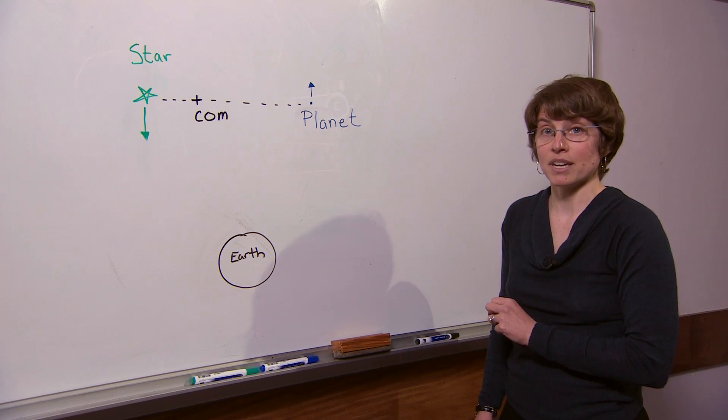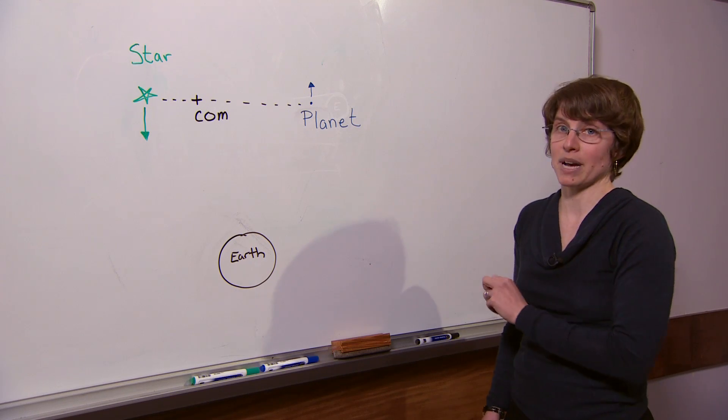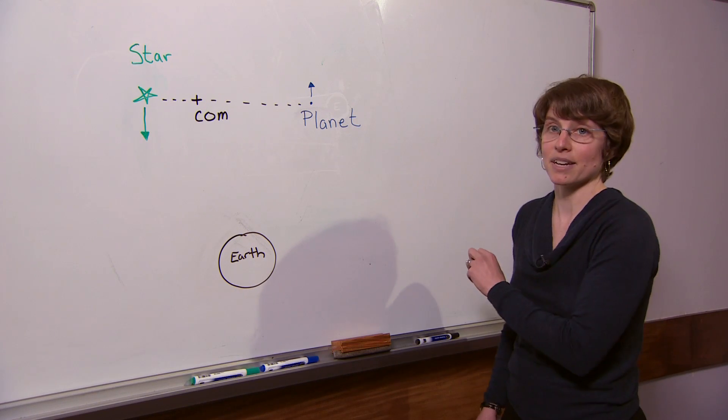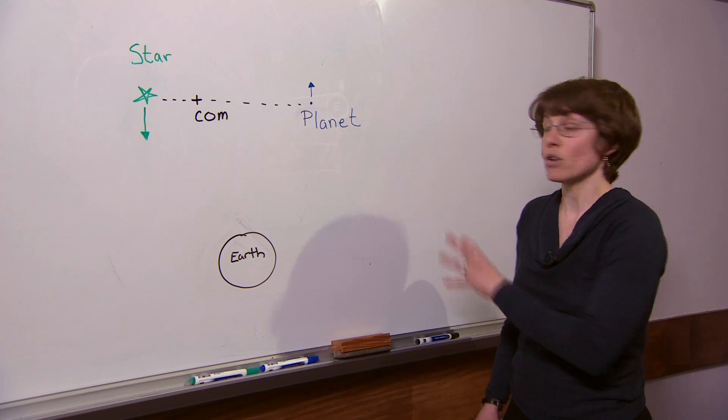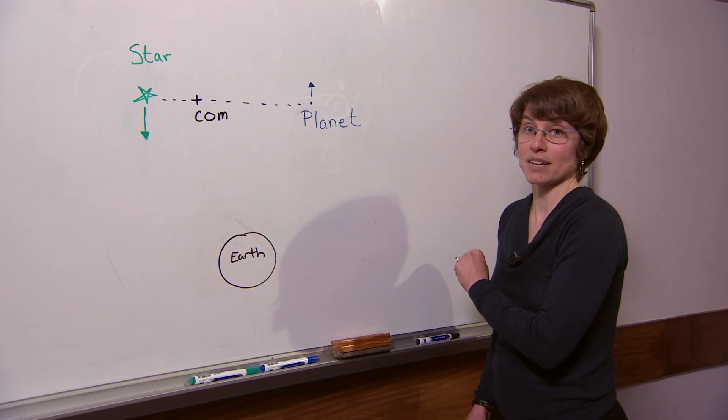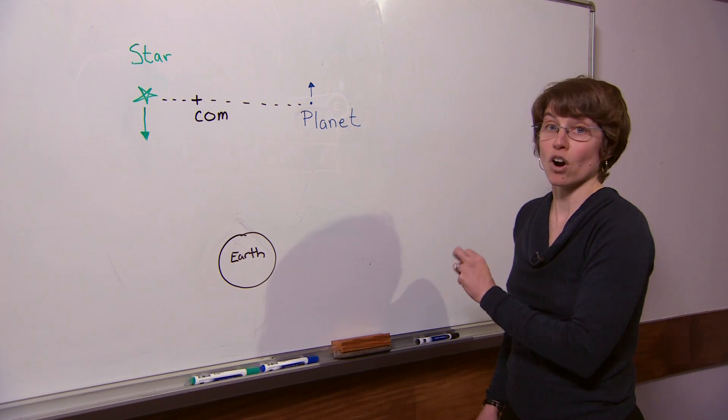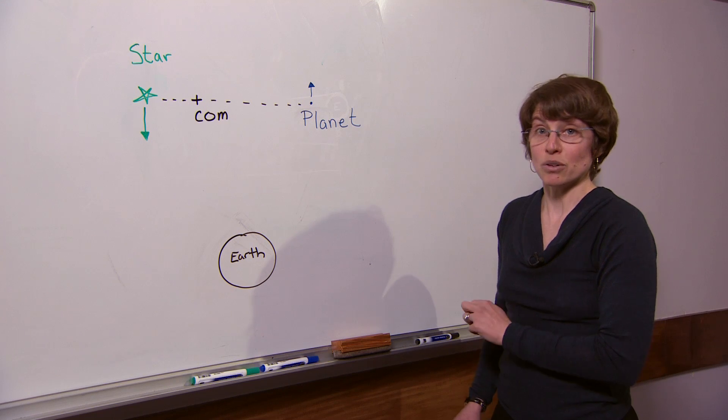Now the disadvantage of this method is that it only gives us the minimum mass of the planet or companion, and so in some cases we don't know if it's actually a planet. But it has been by far the most successful technique used.